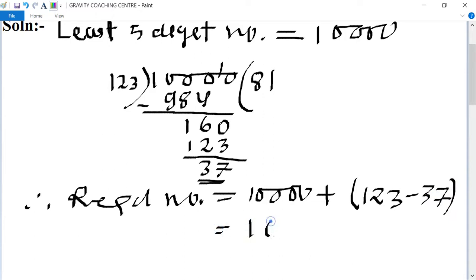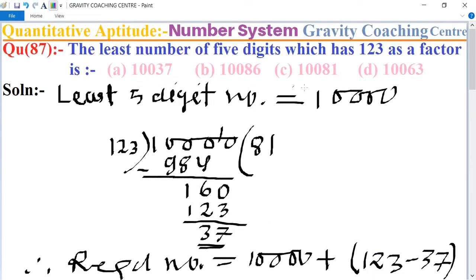This equals 10000 plus 86, which equals 10086, which is the required least number that is divisible by 123. So option B is the correct answer.